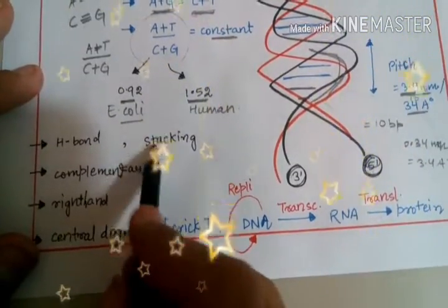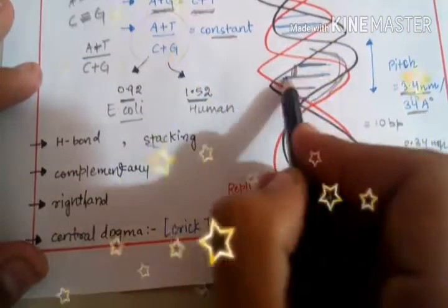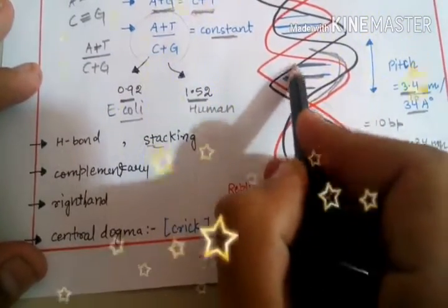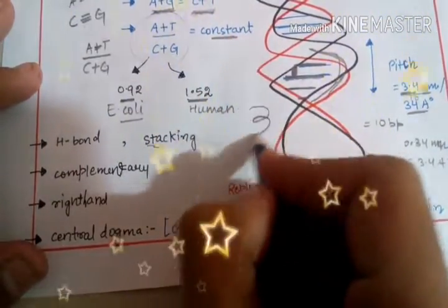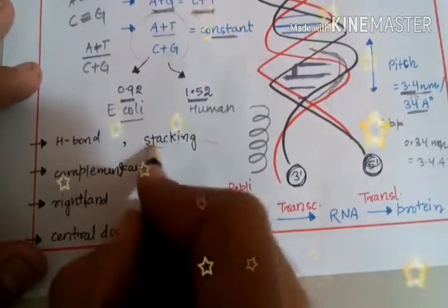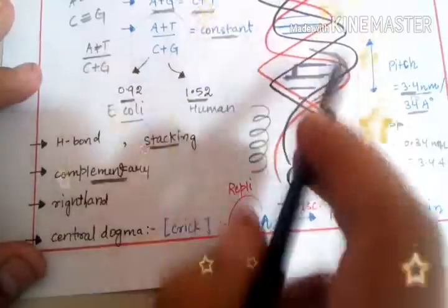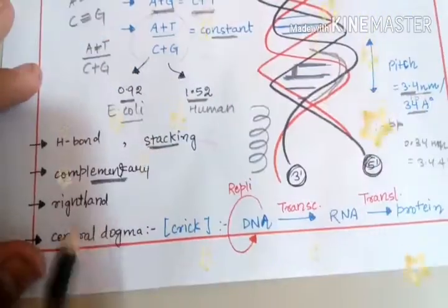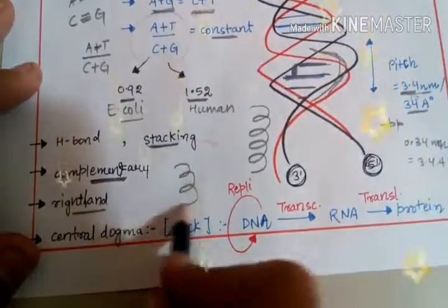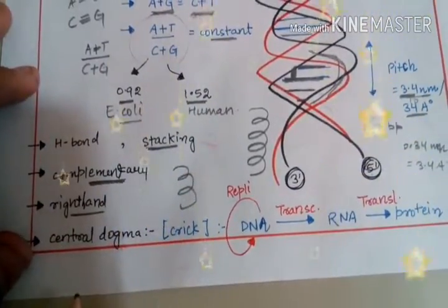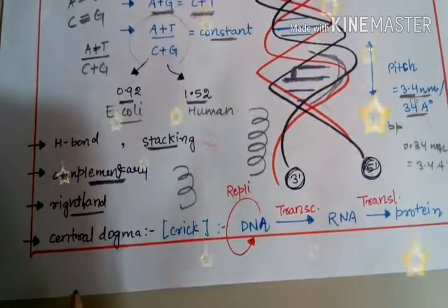There is stacking. One base pair stacked over another base pair to stabilize the helical stability. This is known as the stacking force. There are some complementary properties, that is 3' to 5'. The helix is turned in the right handed fashion.